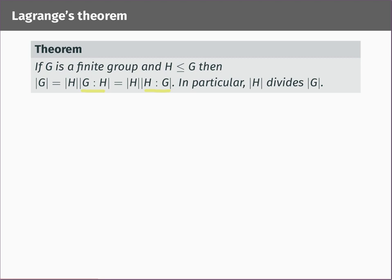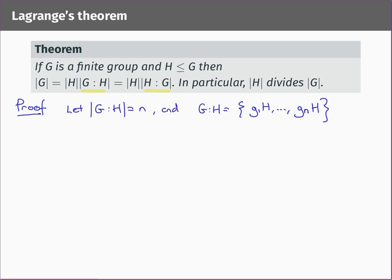We are ready to prove this result. Let's just do the one for left cosets — the argument for right cosets is exactly the same. Let's say the number of distinct left cosets has size n, so I have to prove that the size of G is n times the size of H. With n cosets, let's call them g₁H, g₂H, g₃H, up to gₙH — these are all the distinct left cosets of H.